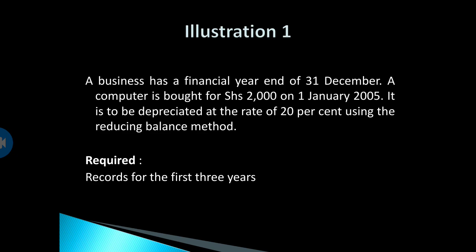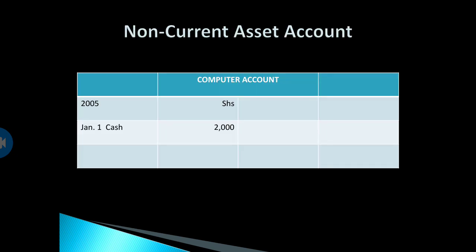As mentioned, you need two different accounts: one for the non-current asset account — which will be the computer account in this case — and another for the accumulated provision for depreciation account. For the non-current asset account, you debit it with the cost of the computer. So on 1st January 2005, there will be a debit entry of 2,000, showing that cash of 2,000 was paid to acquire a computer. Whenever we make a debit entry, we are increasing an asset account.